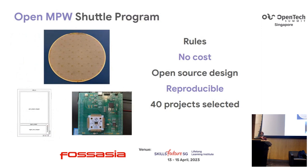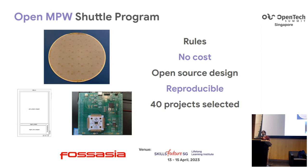Once you have the PDK and tools, you still need a way to manufacture the chip. Manufacturing can cost tens or even hundreds of thousands of dollars even on older technology. So we started an Open MPW Shuttle program that provides low-cost manufacturing to the community. The community only needs to produce an open source design that's reproducible with open source tools to enroll, and we select around 40 projects per shuttle round to get manufactured.